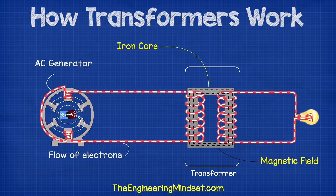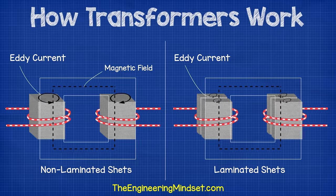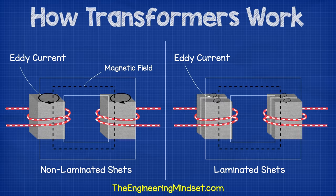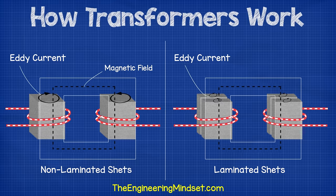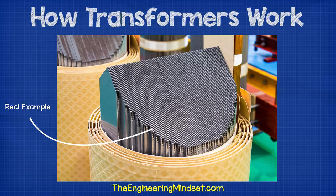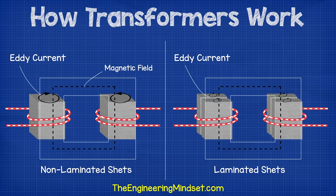Now the use of an iron core is not a perfect solution. Some energy will be lost through something known as eddy currents, where the current swirls around the core, and this heats up the transformer, meaning that energy is lost as heat. To reduce this, engineers use laminated sheets of iron to form the core, and this greatly reduces the eddy currents.